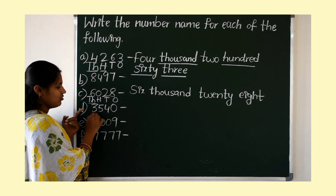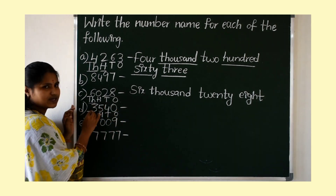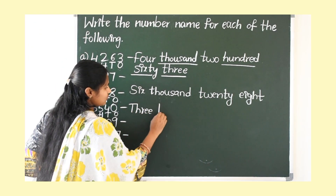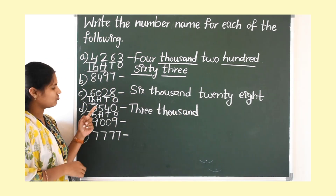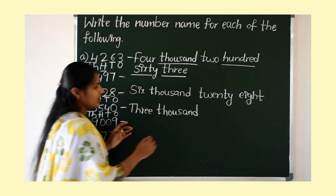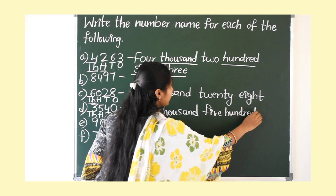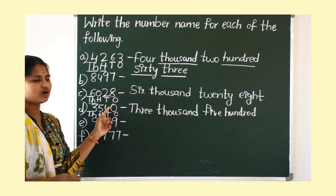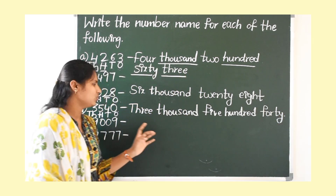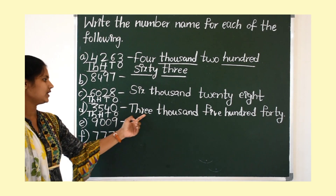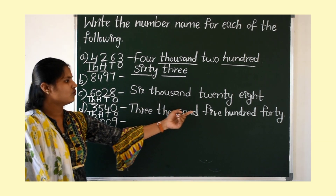Next: 3540. Write down the place values and the number name. How many 1000's? 3000. How many 100's? 500 — write five hundred. 4 tens make 40. And 0 ones — don't write the ones. Answer: three thousand five hundred forty.